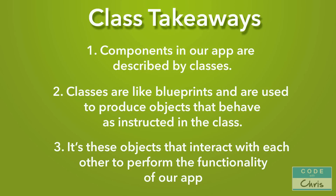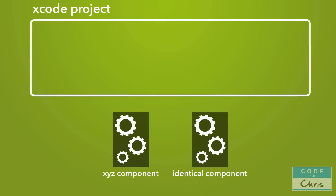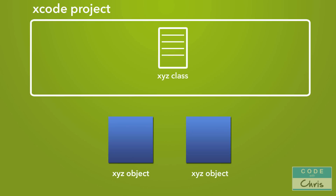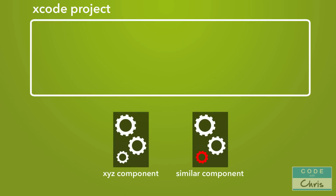In the last lesson we learned about classes and how you can create a class to describe a component in your app. We also said that you can create multiple objects from one class, which is really convenient because let's say we have two identical components in our app — we can write a single class and create two objects from it. Well, consider this scenario: what if you need two components that are not identical but very similar — let's say 90% similar in their behavior.